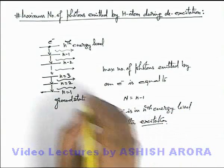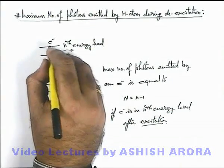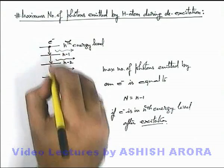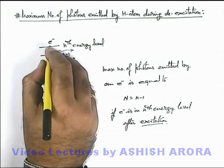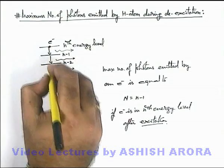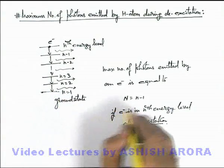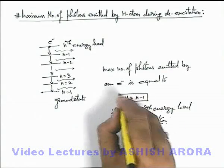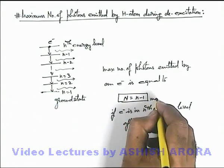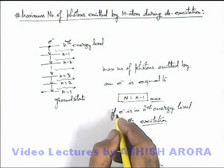So we can directly state if there is an electron in n-eth energy level and if it is coming down to n equal to 1 by transiting to next successive energy level, then total number of possible combinations here can be n minus 1 only. So n minus 1 are the maximum number of photons which an electron can emit.